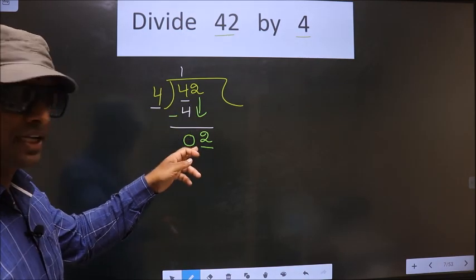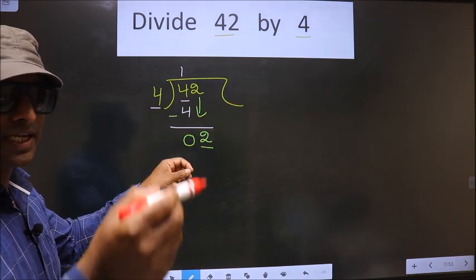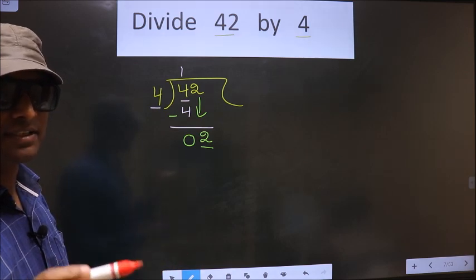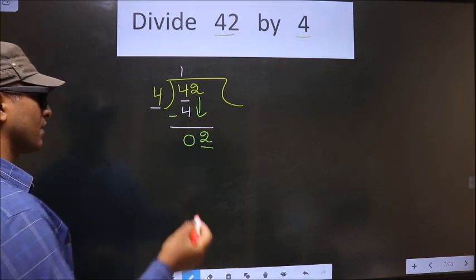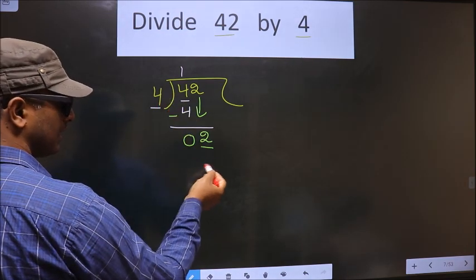You brought this number down. In the same step, you cannot put the decimal and 0. Both at a single step is wrong. Instead, what you should think about is: to this, what number shall I multiply to get a number here?